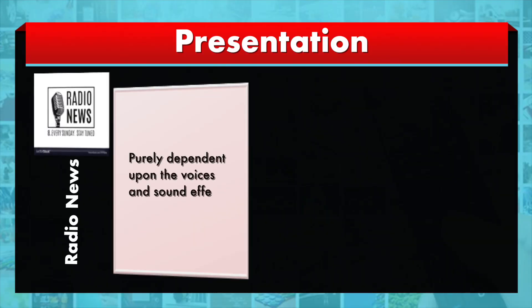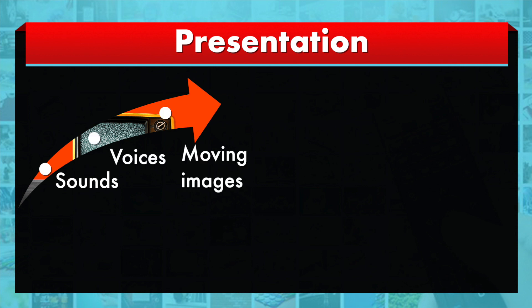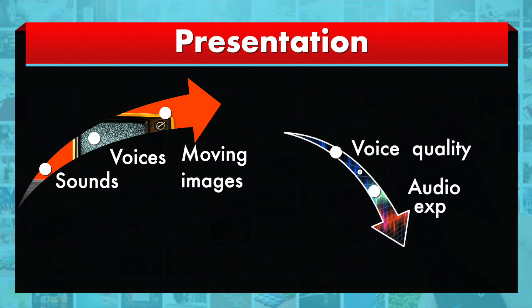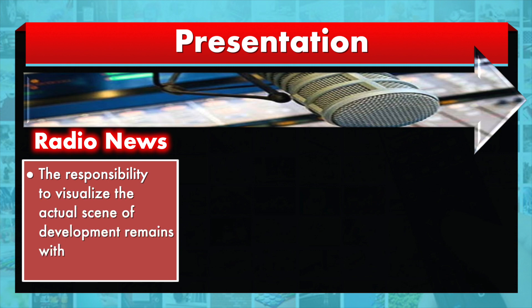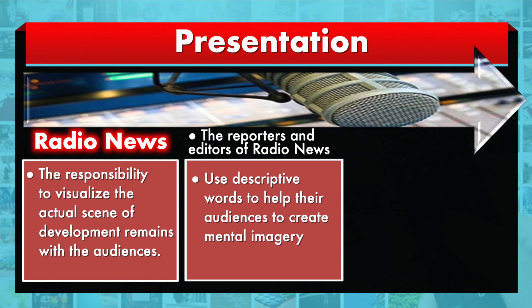Radio news is purely dependent upon voices and sound effects, whereas TV news producers are most concerned about the visuals or moving images that audiences will see and interpret. TV news combines all three elements — sound, voices and moving images — whereas voice quality and audio expressions remain the primary focus of radio producers. In radio news, the responsibility to visualize the actual scene remains with the audiences, though reporters and editors use descriptive words to help create mental imagery.